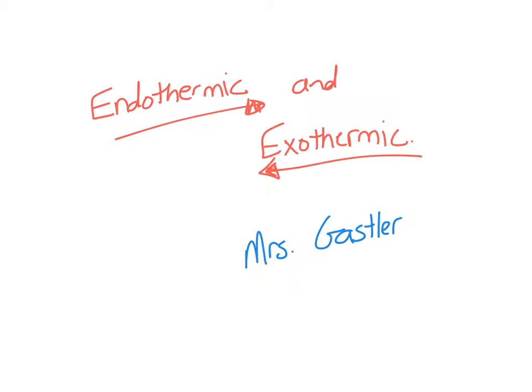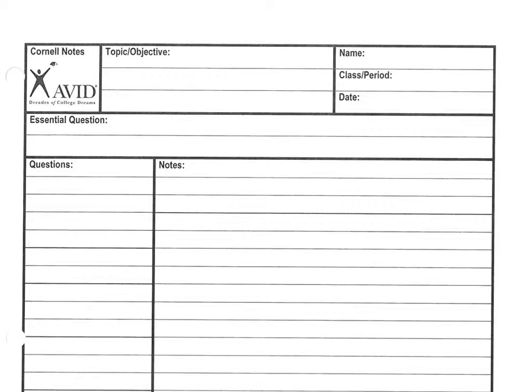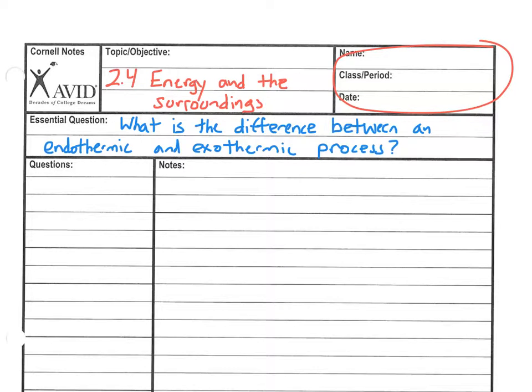Hi guys, in this video we're going to talk about endothermic and exothermic processes. These are having to do with energy changes in a system. This is for objective 2.4 in unit 2, so let's get out our Cornell paper. Remember, you've got to fill out your name, class period, and date, and our objective is 2.4 energy and the surroundings.